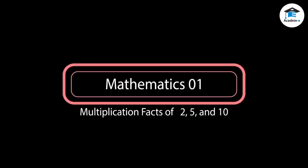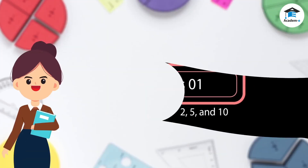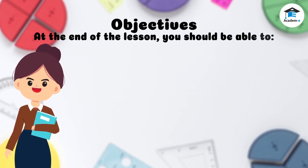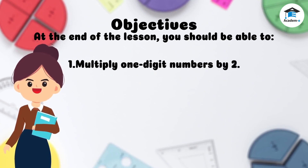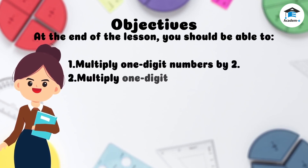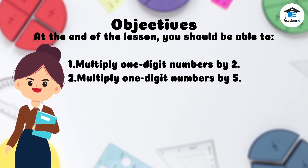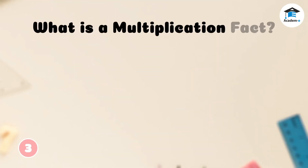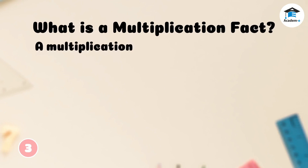Mathematics 1: Multiplication Facts of 2, 5, and 10. Objectives: At the end of the lesson, you should be able to: one, multiply one-digit numbers by 2; two, multiply one-digit numbers by 5; three, multiply one-digit numbers by 10.